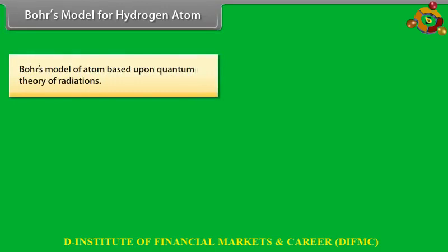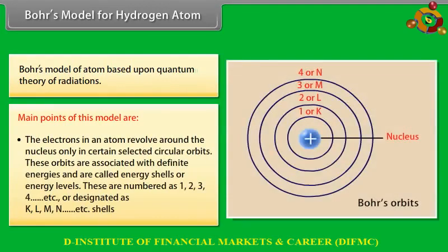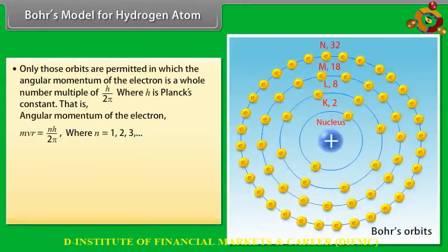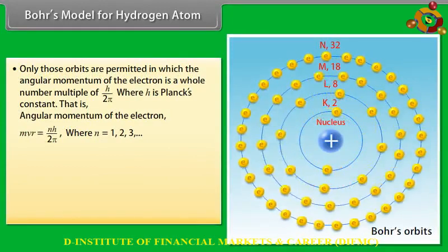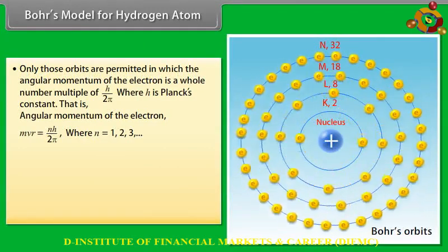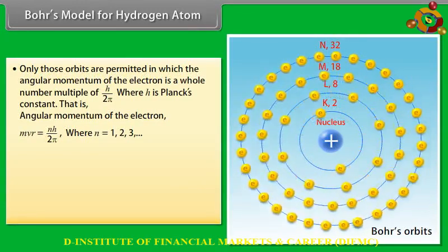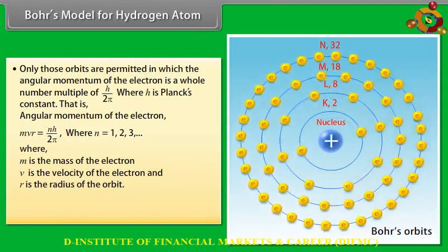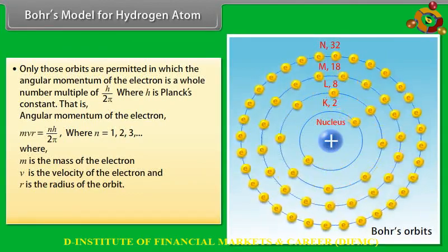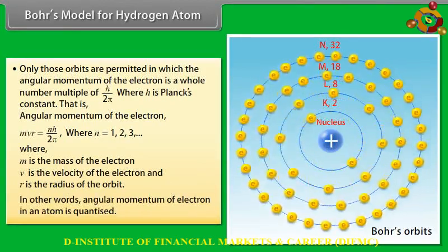Bohr's model of hydrogen atom is based upon the quantum theory of radiation. Main points: (1) Electrons revolve around the nucleus only in certain selected circular orbits called energy shells or energy levels, numbered 1, 2, 3, 4 or designated K, L, M, N. (2) Only those orbits are permitted in which the angular momentum of the electron is a whole number multiple of h/2π — that is, mvr = nh/2π where n = 1, 2, 3, etc.; m is electron mass, v is velocity, r is orbital radius. In other words, angular momentum of the electron is quantized.